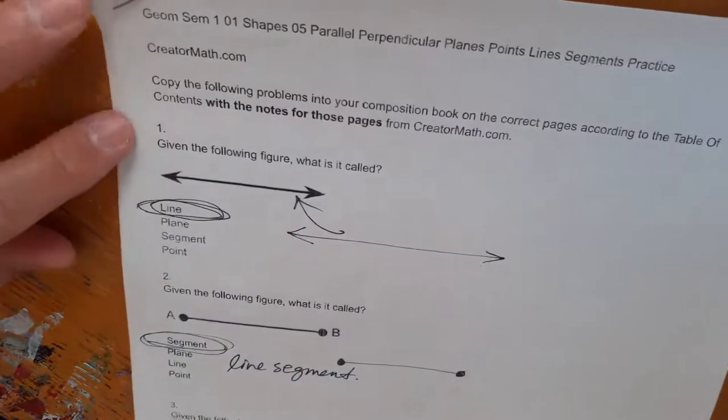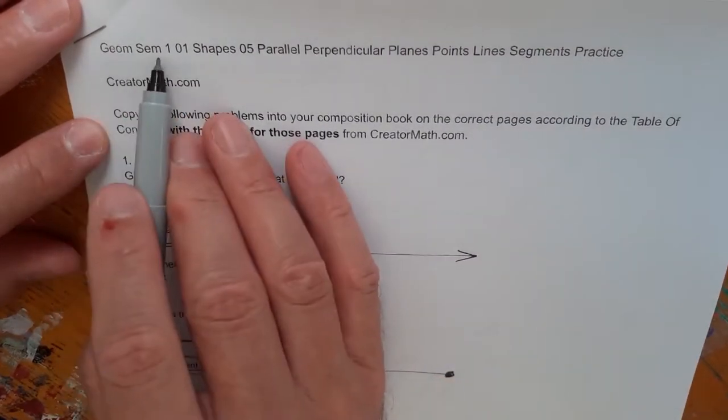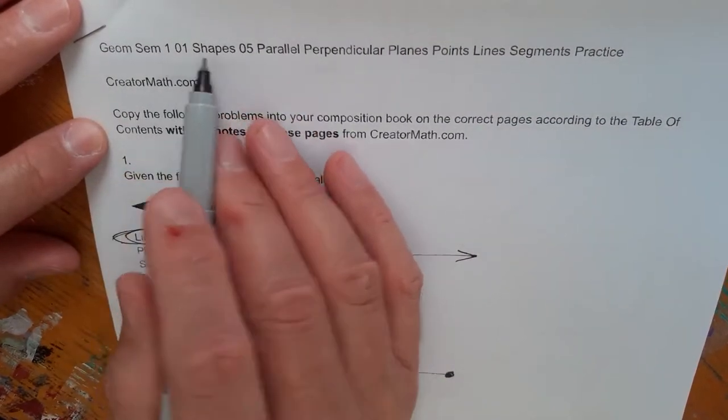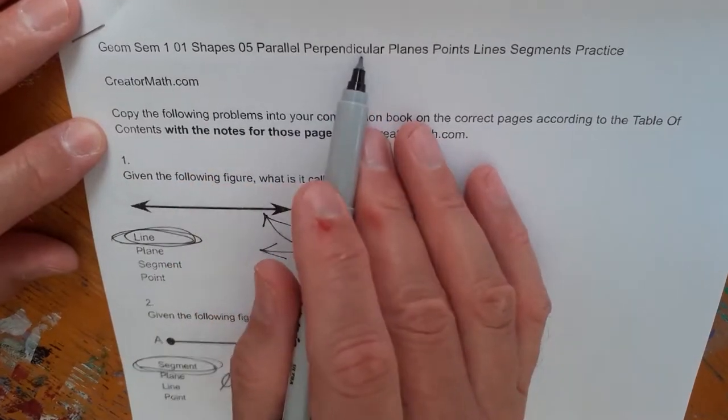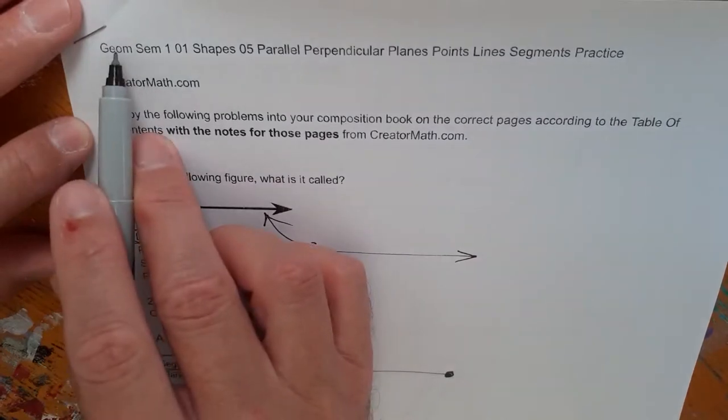Make sure you're matching up the title of this lesson. Geometry, semester one. This is the unit on shapes, and this is the fifth lesson, parallel perpendicular planes, points, lines, and segments practice on creatormath.com under the geometry tab.